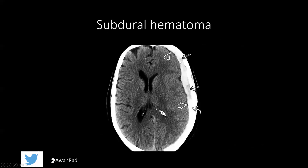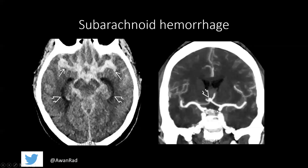In contrast, a subdural hematoma is also seen along the convexity and the periphery of the brain, but notice that it's crescentic shaped with a concave border. This dense material is all subdural hematoma, and it exerts mass effect on the brain parenchyma because it's an extra-axial fluid collection. Subdural hematomas are usually due to tearing of cortical bridging veins.